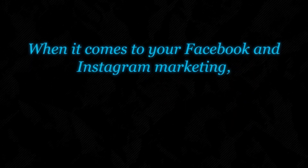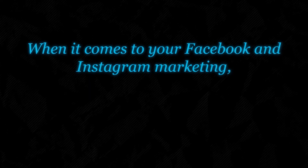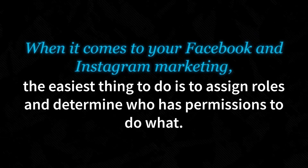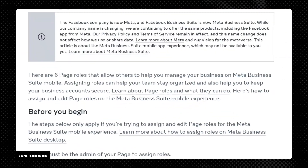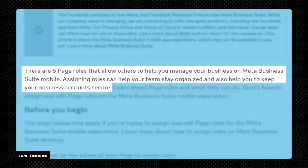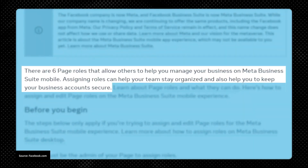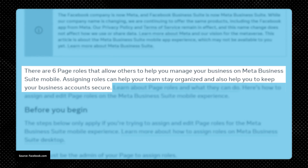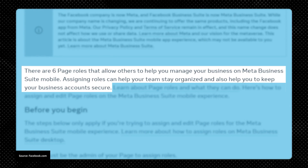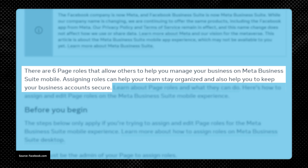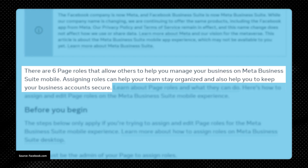And specifically when it comes to your Facebook and Instagram marketing, the easiest thing to do is to assign roles and determine who has permissions to do what. Facebook's parent company Meta has six page roles that allow others to help you manage your business on Meta Business Suite mobile and desktop. Assigning roles can help your team stay organized and also help you keep your business account secure, which is super important because the amount of people getting their Facebook page hacked is unreal.